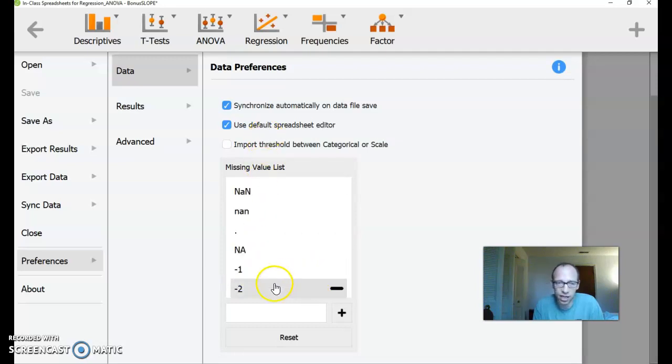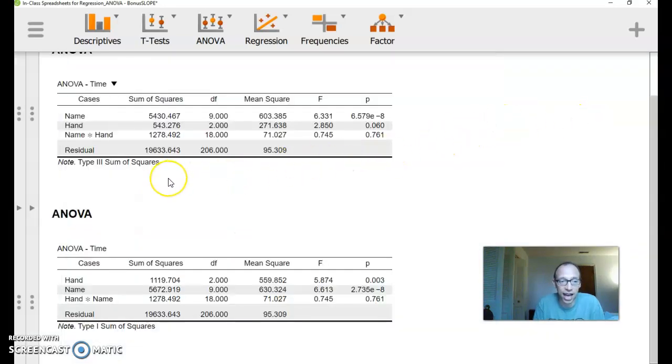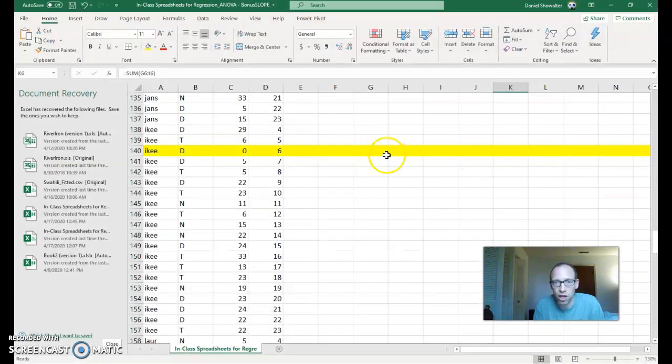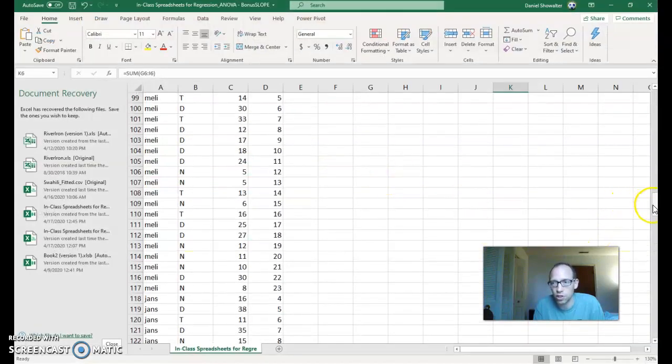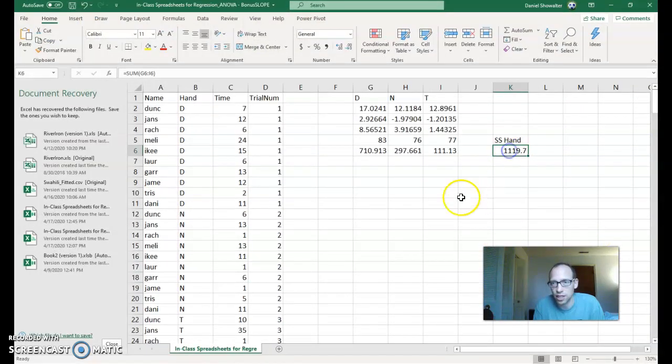So once we take that out of missing values, it allows Aiki to have that zero. And notice now that the sum of squares per hand is 1119.704, which matches nicely with what we have here. This is just rounded decimal places. So that's exactly the same now. So that just leaves one more question.